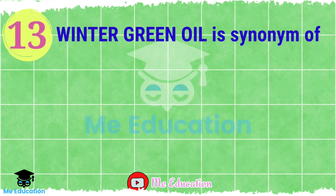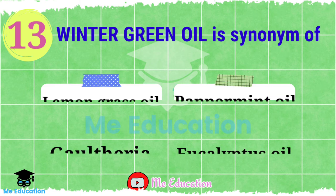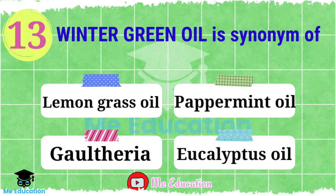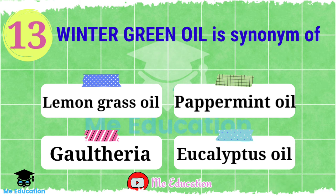Question number 13: Wintergreen oil is a synonym of — Option A: lemongrass oil; Option B: peppermint oil; Option C: Gaultheria; Option D: eucalyptus oil. Now pause the video and try to solve this question. The right answer is Option C, Gaultheria.